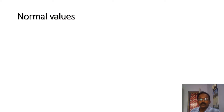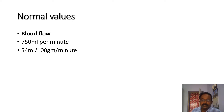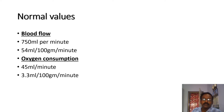The normal value of cerebral blood flow is 750 ml per minute, which is 14 percent of the cardiac output, or 54 ml per 100 grams per minute. The normal brain weight is 1.4 kg, and it receives 750 ml per minute of blood flow. The oxygen consumption of the brain is 45 ml per minute, which can be expressed as 3.3 ml per 100 grams per minute.